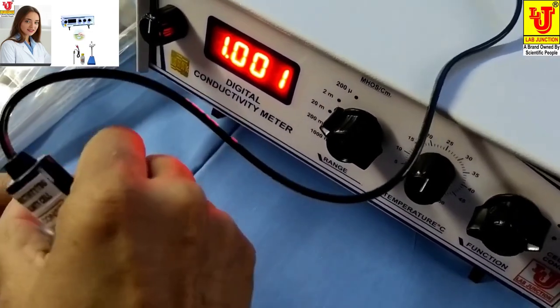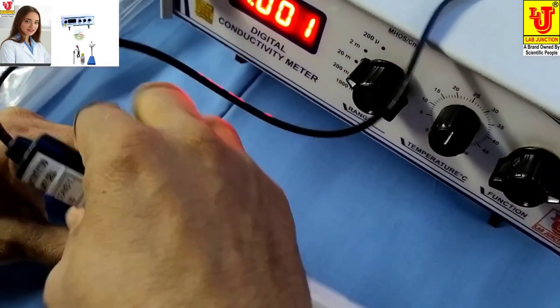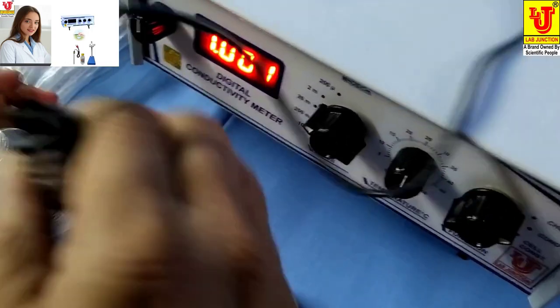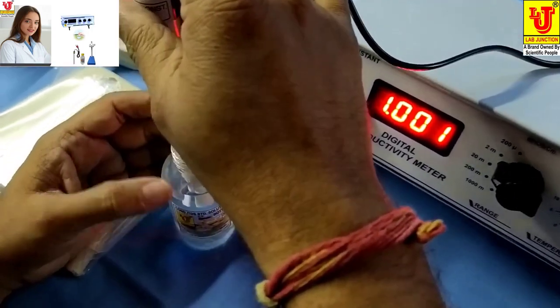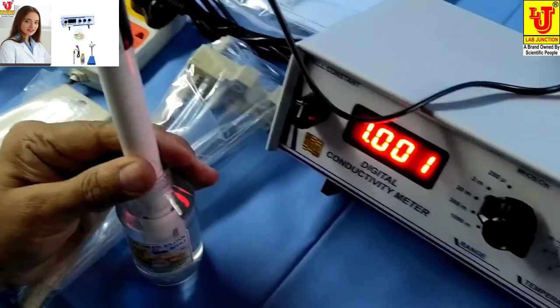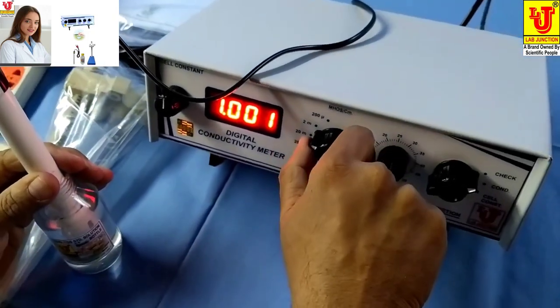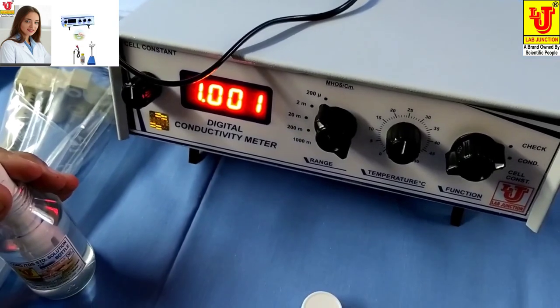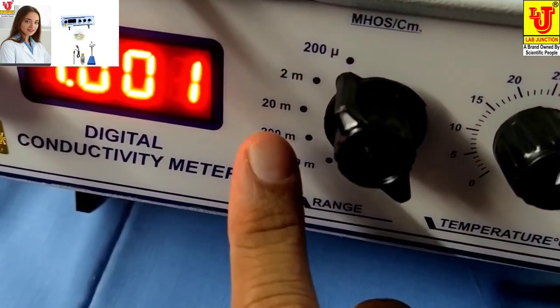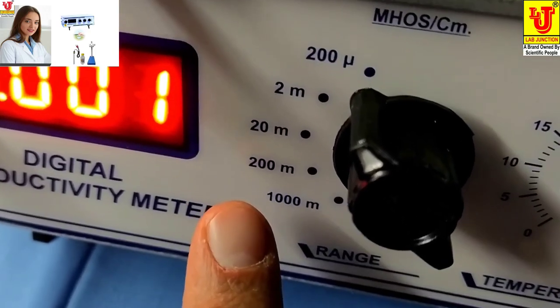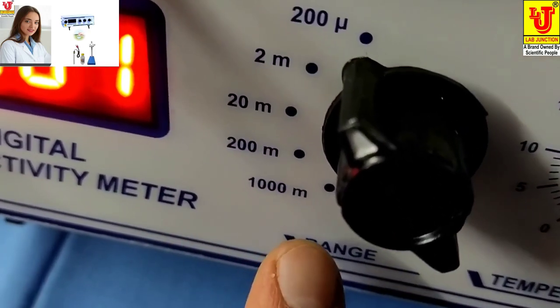This is our Conductivity Solution. You can dip in that. You can set first range 200 Microsiemens, second is 2 Milli, third is 20 Milli, fourth is 200 Milli, fifth is 1000 Milli.